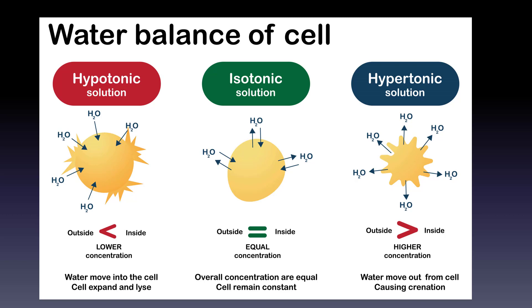The key concept is: where is the solute? The water follows the solute. There is more solute in the cell in hypotonic — that's why water goes in and the cell explodes. In isotonic, the amount is even on both sides, so water goes in and out equally. In hypertonic, there's more solute on the outside, so water moves outward.